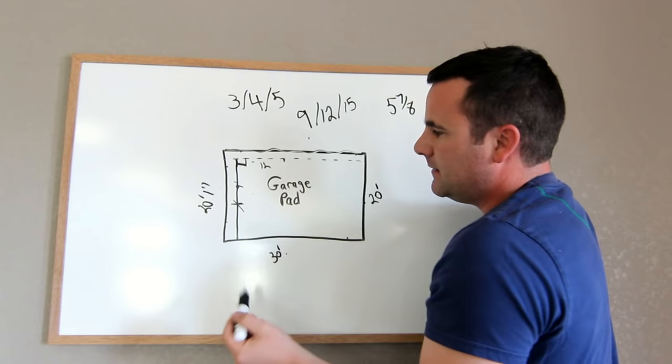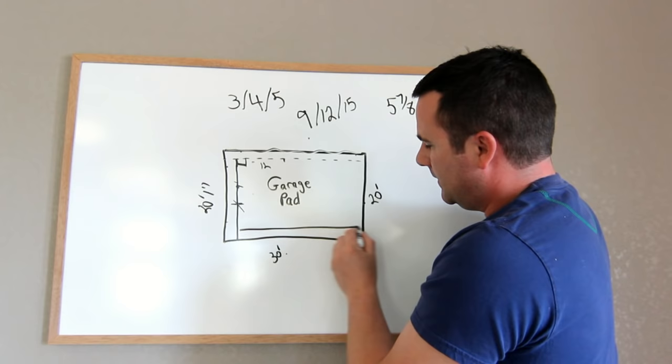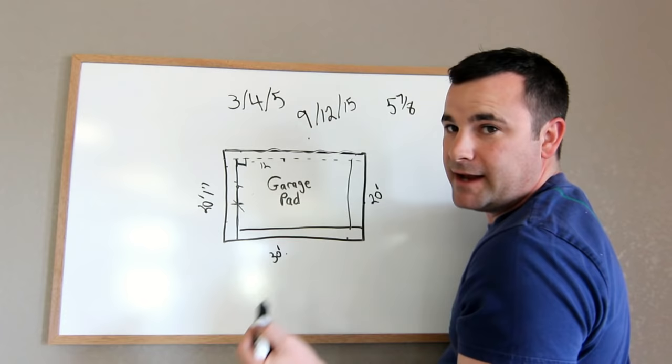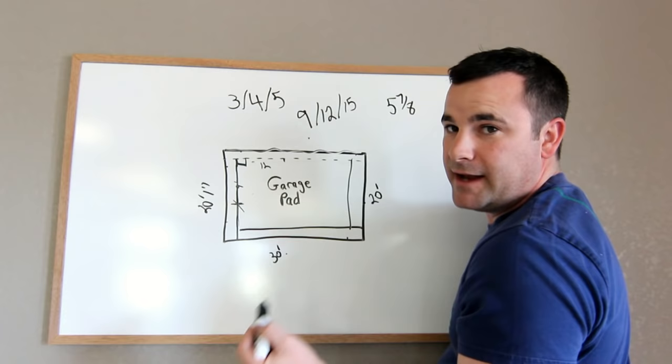Then it's just a matter of making this measurement and this one parallel, and just making this one and this wall parallel, and then just to confirm, you just do the diagonal measurements and it should be square.